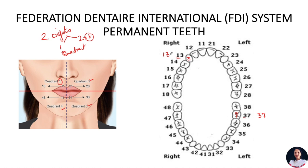The upper left canine would be: canine is tooth number 3, and for upper left it is quadrant number 2, so it is '2-3.' In the FDI system, there is no confusion and it is simple to learn and understand.